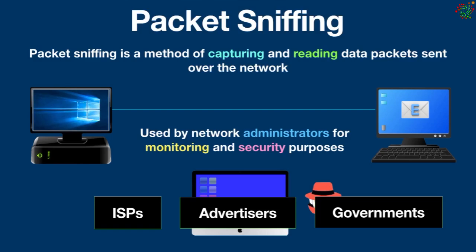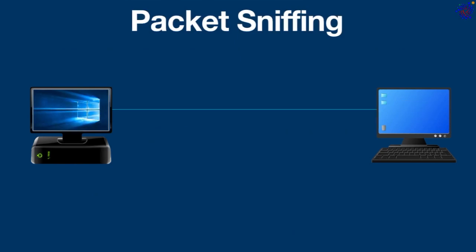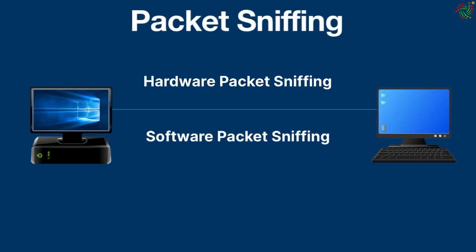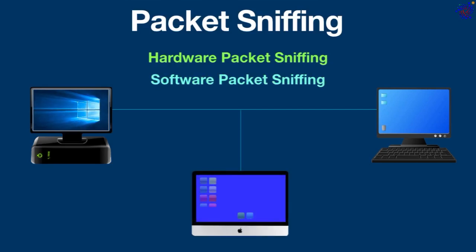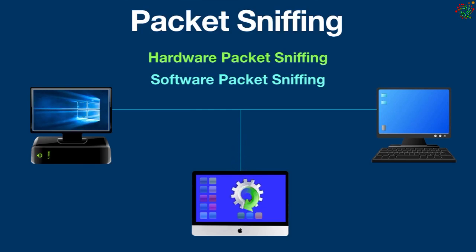There are two main types of packet sniffing: hardware and software. Hardware packet sniffing uses a physical device that plugs directly into the network; this method is favored by IT professionals who want to access specific network traffic. Software packet sniffing uses a program to capture all network traffic sent across the network, and is much more popular today than hardware packet sniffing.